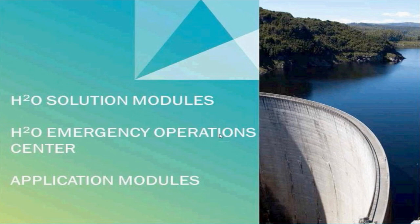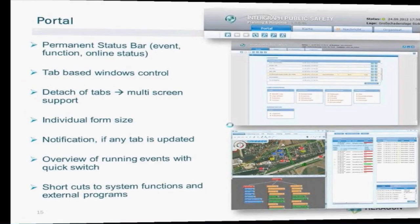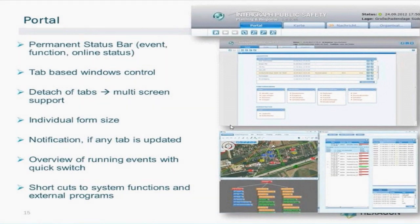The H2O Emergency Operation Center application is broken up into five different modules. The portal module is the main page where operations or emergencies are created by key users. An authorized user enters the application and creates an operation or emergency relevant to the event, such as a flood level one operation. This operation already has predefined notifications and tasks from the EAP for that particular event type and level entered into the system, so once the new operation is created, notifications can be sent and tasks allocated quickly. Training exercises can also be created here, and previous emergencies can be selected and reviewed from this module.